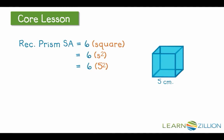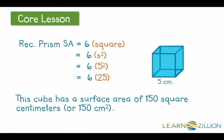In this case, the side length is 5. So we're going to take 5 squared and multiply that by 6. And 6 times 25, our final step, before we conclude that this cube has a surface area of 150 square centimeters.